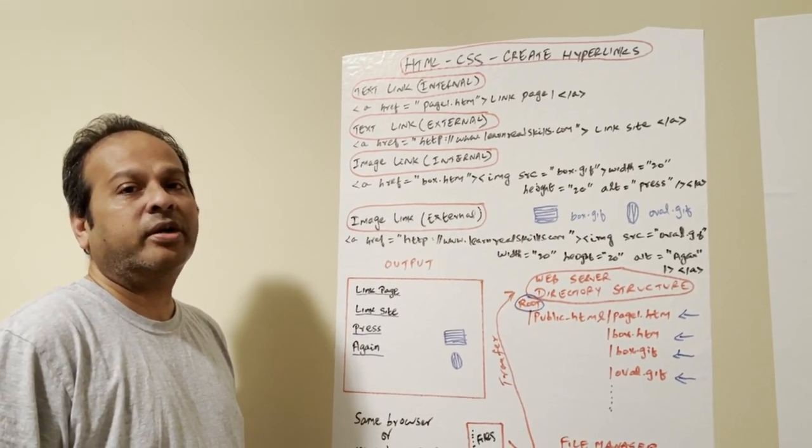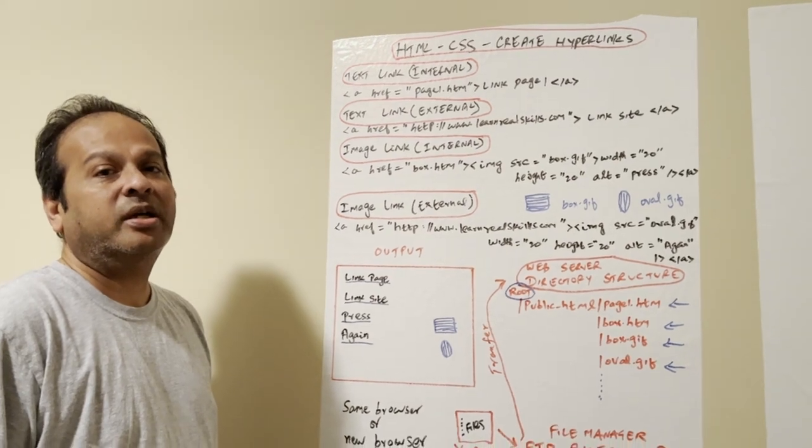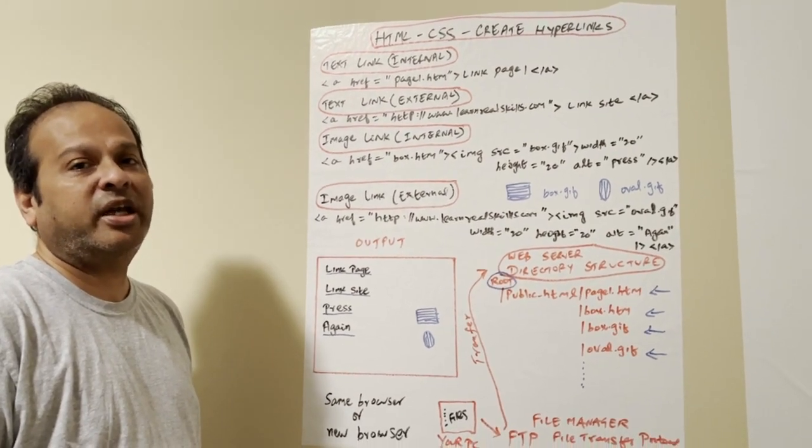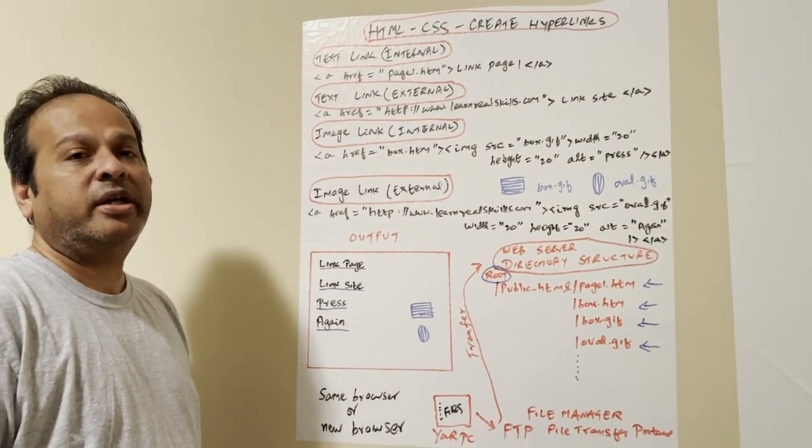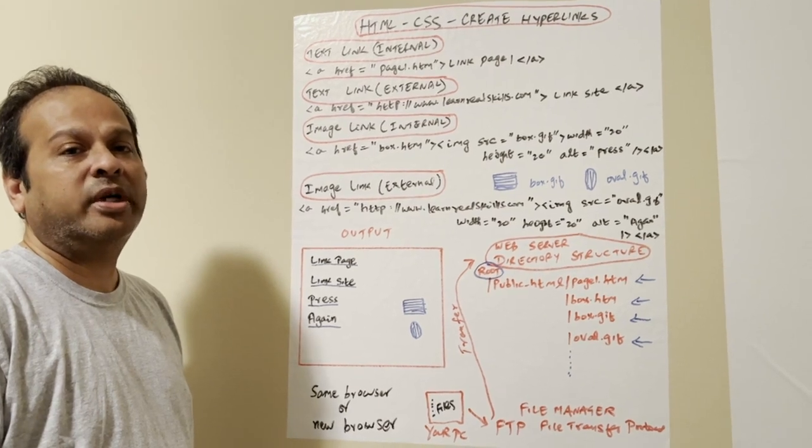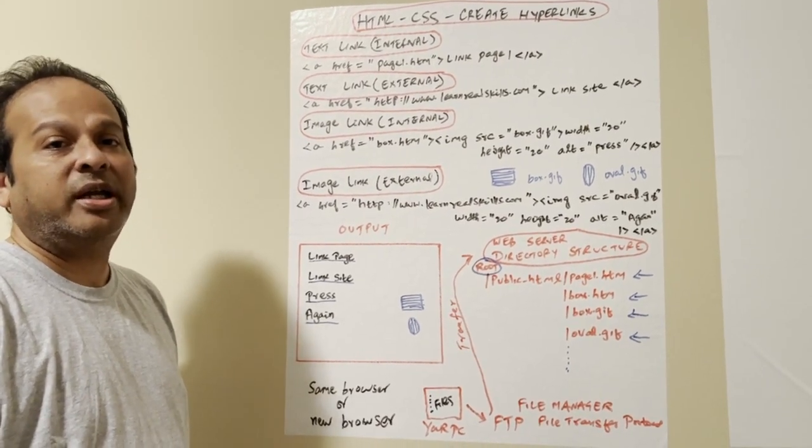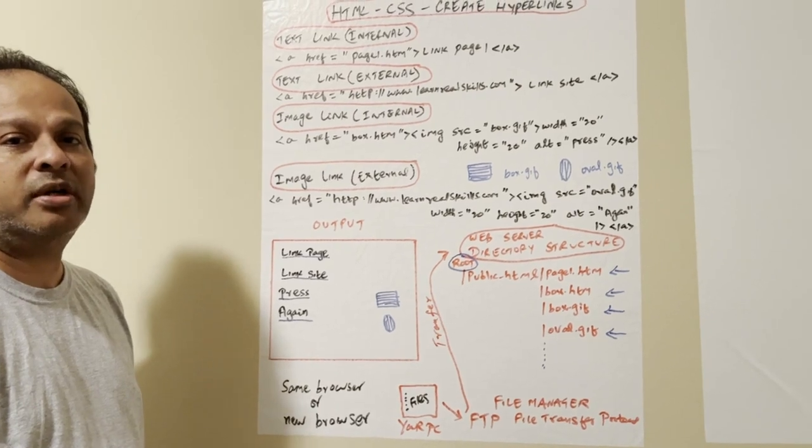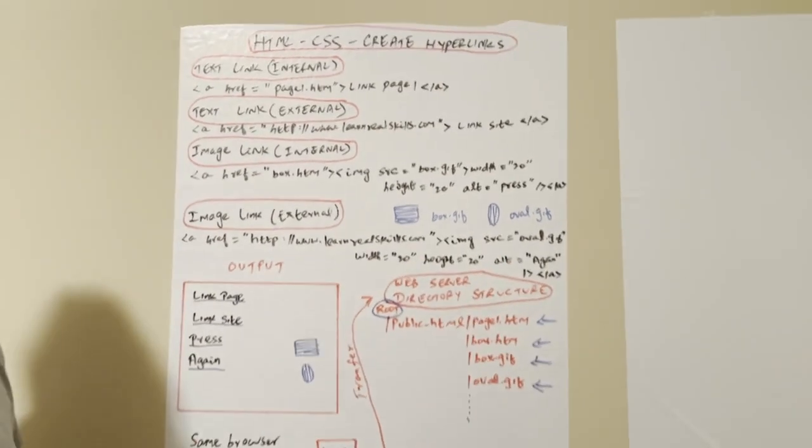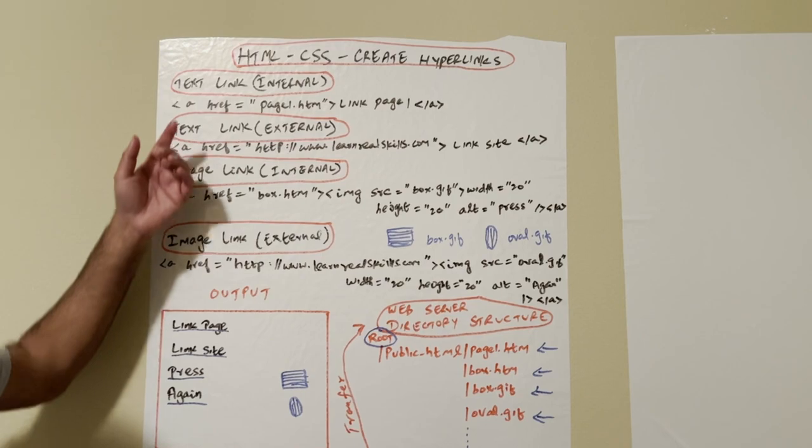Hi, today we continue our journey with HTML CSS cascading style sheets. Previously I put some videos about introduction to HTML, the elements, tags, attributes, values. There are few videos, please watch those before this. Here I am going to explain about the hyperlinks, how we link to different websites, different examples.